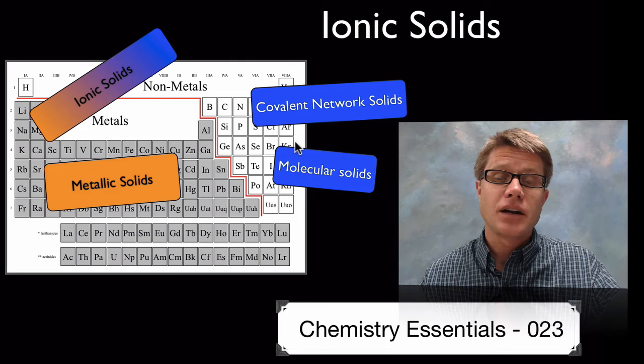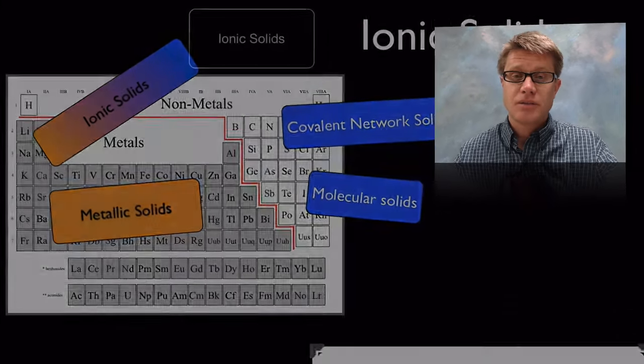If they have large structures of covalently bonded atoms we call that a covalent network solid. In this video we're going to talk about ionic solids which are a combination of metal and nonmetals.